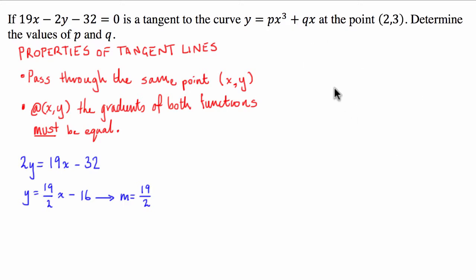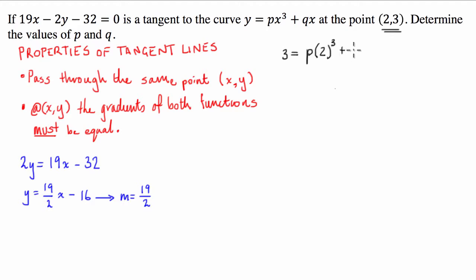Our first equation uses the fact that the cubic function goes through the point (2, 3). Substituting into y equals px cubed plus qx, we get 3 equals p times 2 cubed plus q times 2, which simplifies to 3 equals 8p plus 2q.